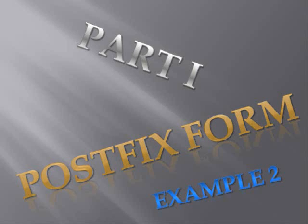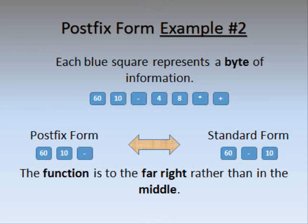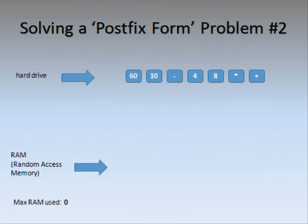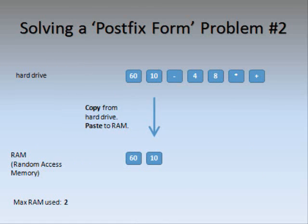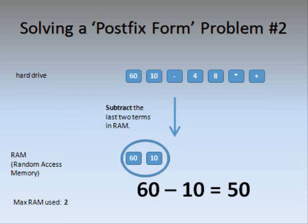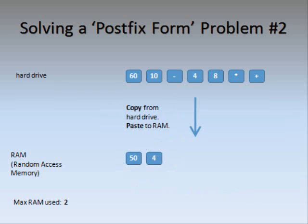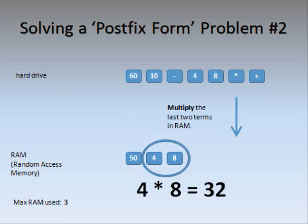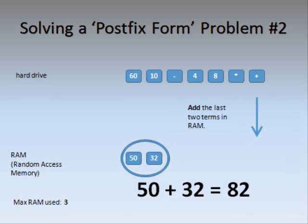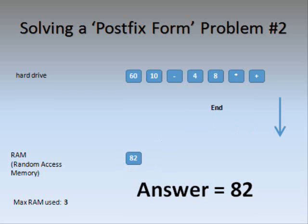Postfix Form Example Number 2: 60, 10, minus, 4, 8, times, plus. Copy, paste the 60. Copy, paste the 10. Subtract. Copy, paste the 4. Copy, paste the 8. Multiply. Add. The answer is 82.